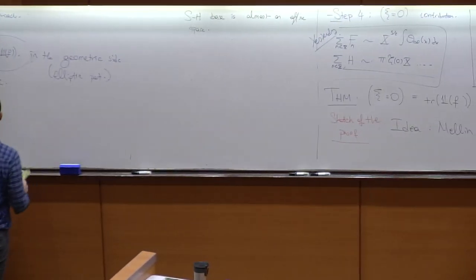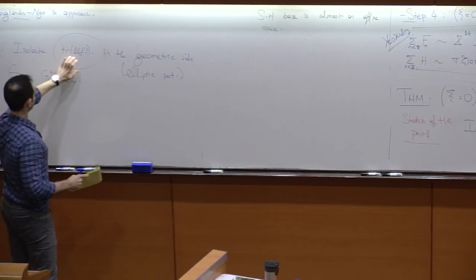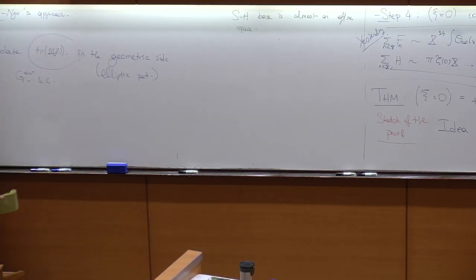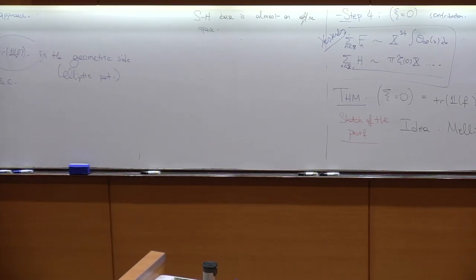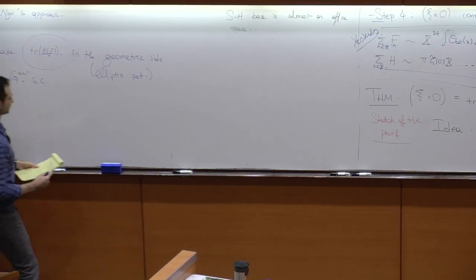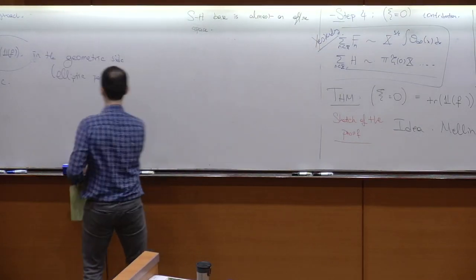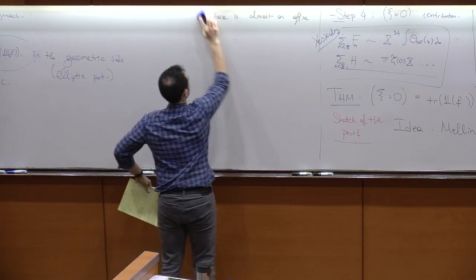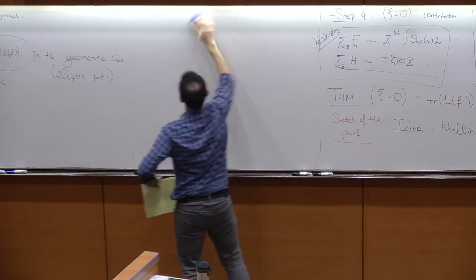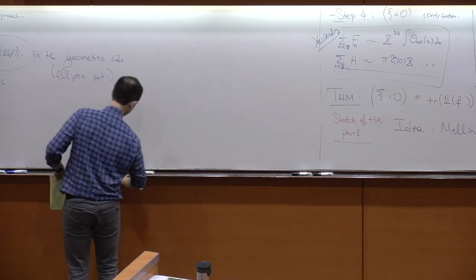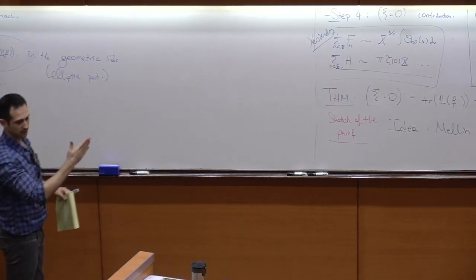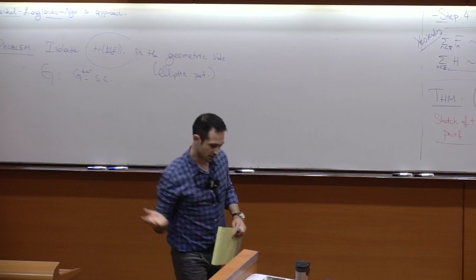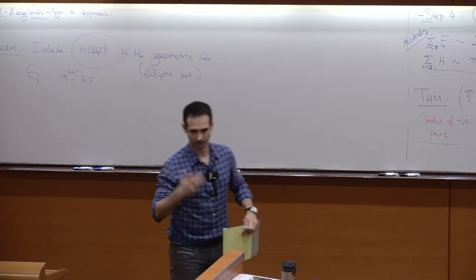They are isolating the trace of the trivial representation in the geometric side. Their setup is they're taking a group G, just a general reductive, semi-simple with derived group simply connected. This is just for technical issues related to the Steinberg quotient — they want to simplify so that the Steinberg base is actually affine, not just almost affine.